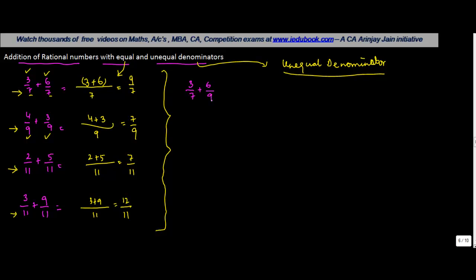Now let's say instead of 3/7, you had 3/7 + 6/9, and here you had 4/9 + 3/11. So the denominators that we have taken in these two questions are different. The denominator here is 7, here it is 9. So how do you resolve this? Well, absolutely no problem.